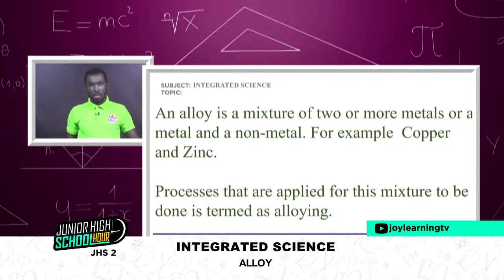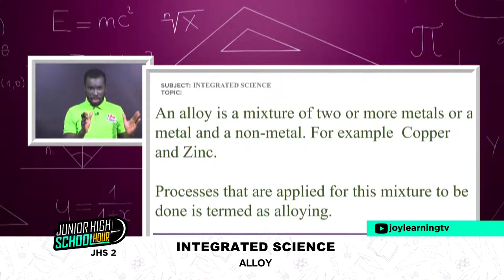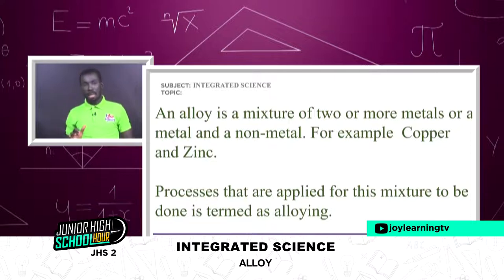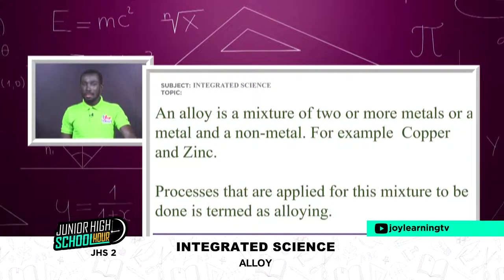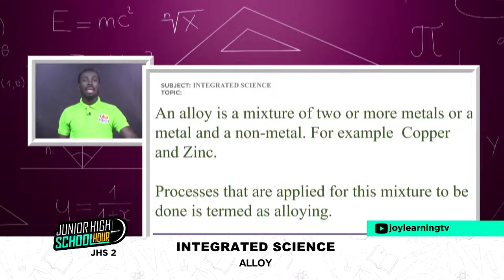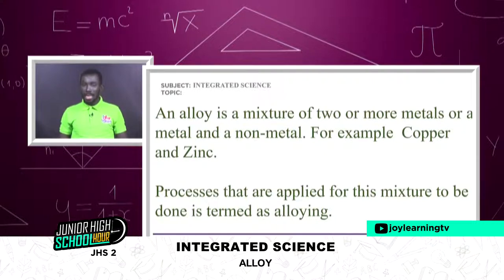An alloy is a mixture of two or more metals, or a metal and a non-metal brought together. To form an alloy, you must first get the metals in their molten state — in liquid form. As you get the two different metals in liquid form, you pour one on the other, stir gently, mix them properly, and an alloy is formed.